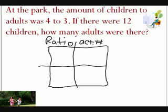Now we're going to go back into the story problem. The ratio for children is 4, so we're going to put a 4 under the ratio and then we're going to label it children.